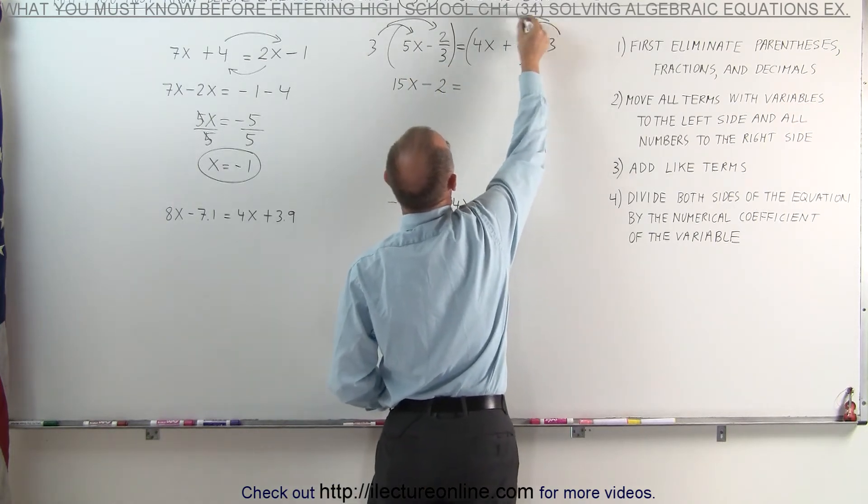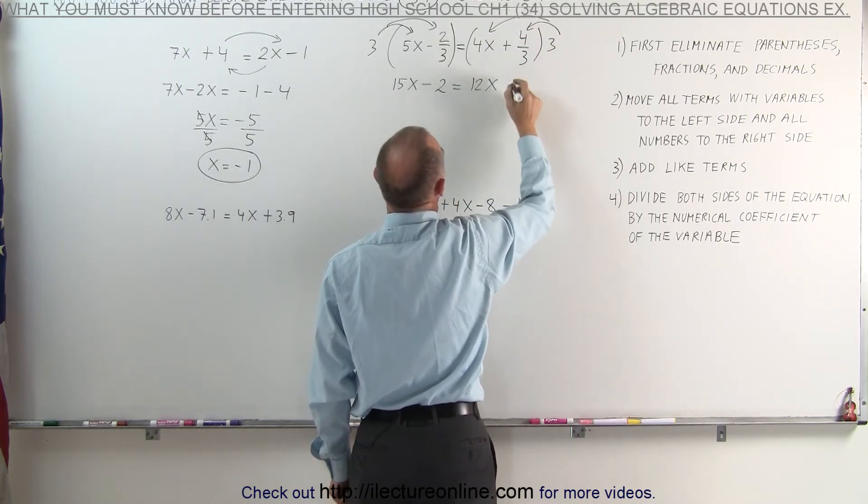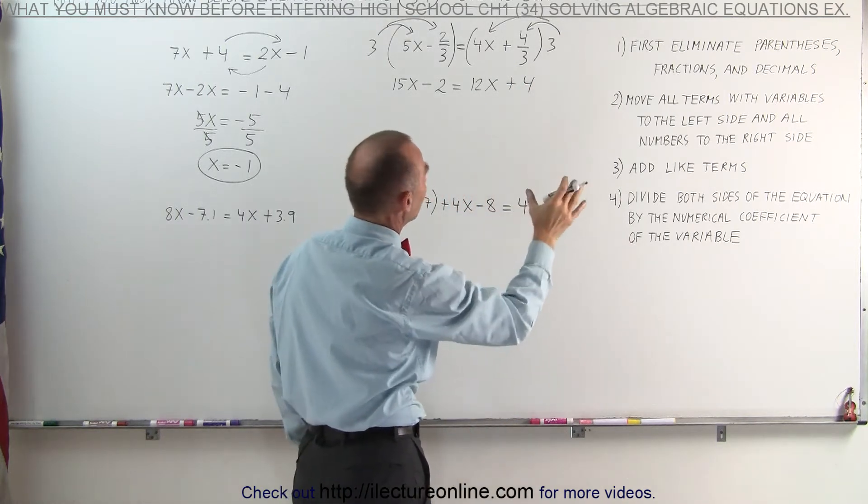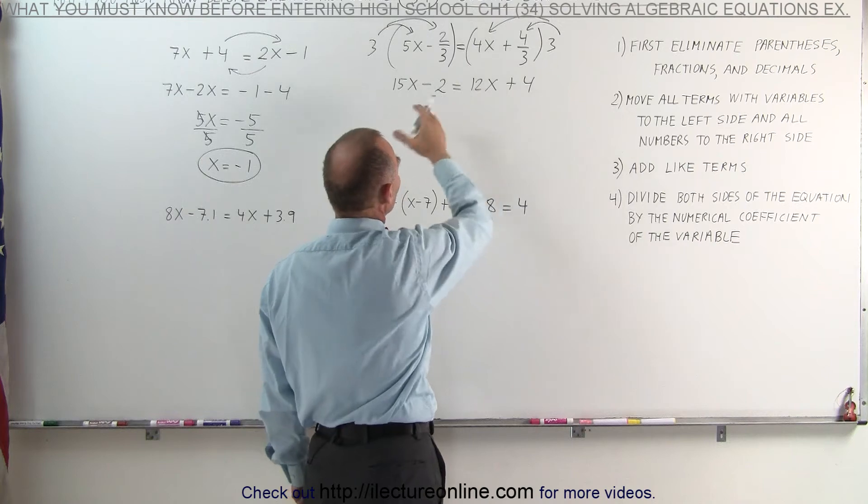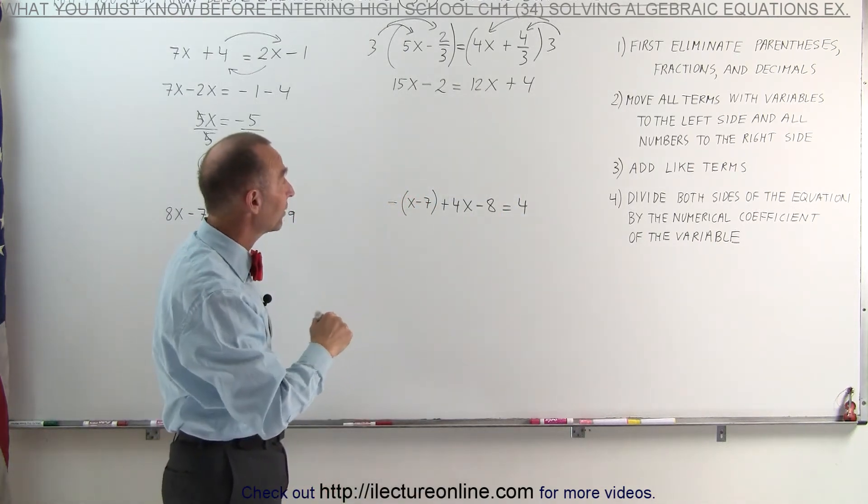When we distribute the 3 on both terms inside the parentheses, we end up with 15x minus the 3 cancels out, end up with a 2 equals 3 times 4. We distribute both terms inside the parentheses. That will give us 12x, and the 3 cancels out here, plus 4. Now we do step number three, move all the terms with the x's to one side, all the numbers to the other side. Remember, when you cross the equal sign, the sign changes.